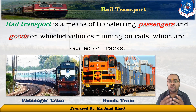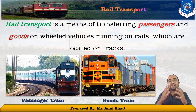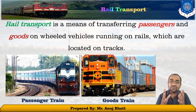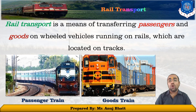Comparing it to road transportation, where vehicles run on a prepared flat surface, rail vehicles are directionally guided by the tracks on which they run. These tracks usually consist of steel rails installed on sleepers set on ballast, on which the rolling stock, usually fitted with metal wheels, moves.